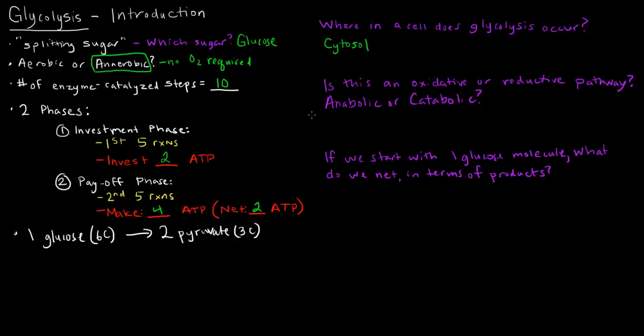So knowing this, is this an oxidative or reductive pathway? Or is it an anabolic or catabolic process? Well, if you watched the last video, you probably remember that anabolism is the building of macromolecules, or building of molecules, and catabolic means the breaking down of molecules. So in this case, we're taking glucose, and we're making it into two pyruvate, two smaller components. So this will definitely be a catabolic pathway, because we're breaking something down.